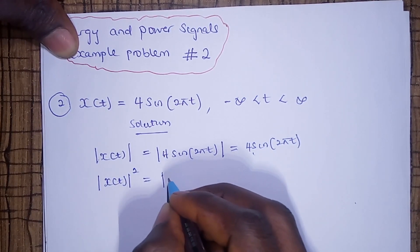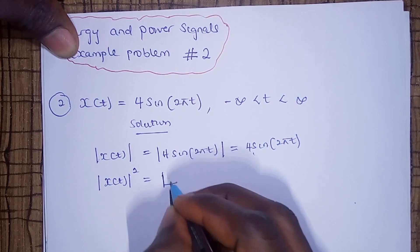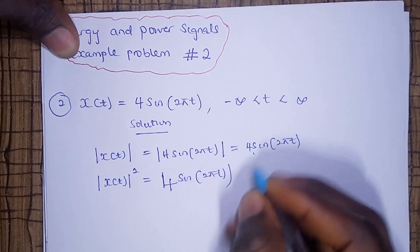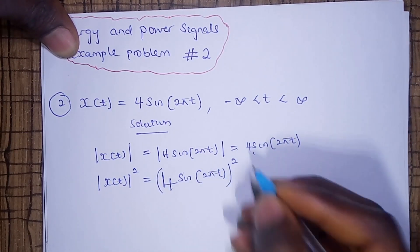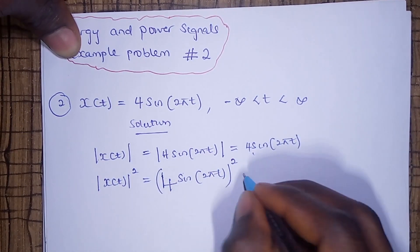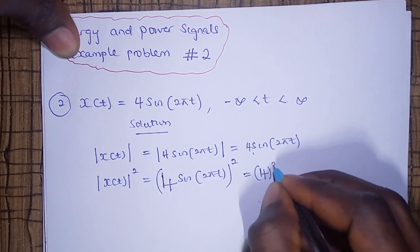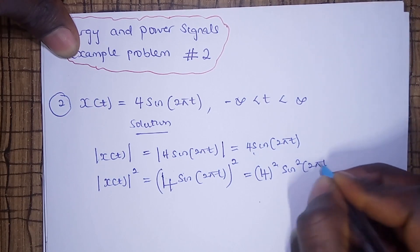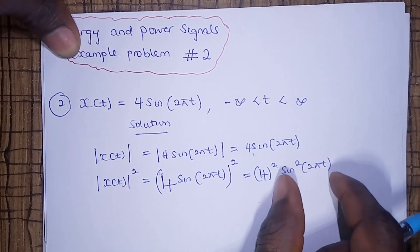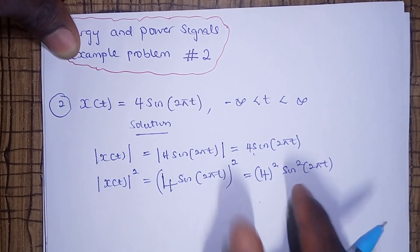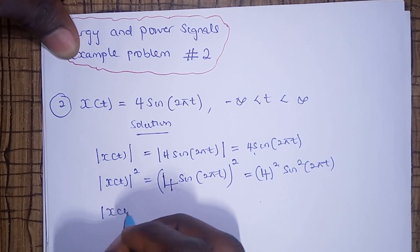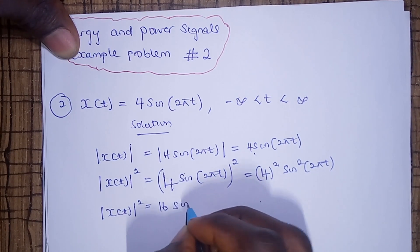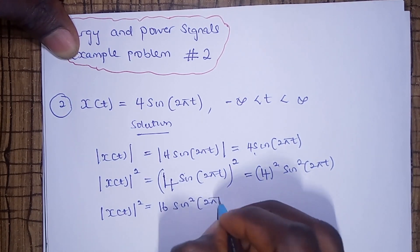The next thing we need to do is square the value of the absolute value. So we have 4 sine 2 pi t, which is the output, then we square it. So we end up having 4 squared and sine squared 2 pi t, which means the square gives us 16 sine squared 2 pi t.